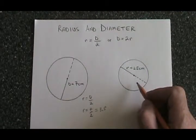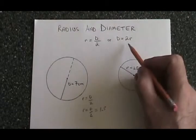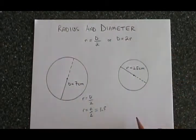Similarly, if we know the radius and we want to know the diameter, we can calculate it using this formula, D equals 2R.